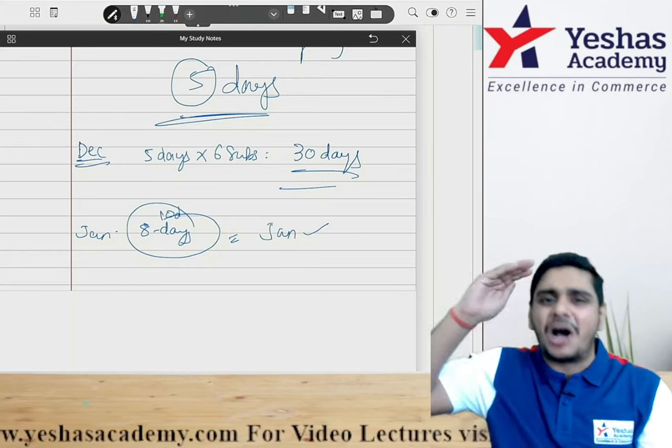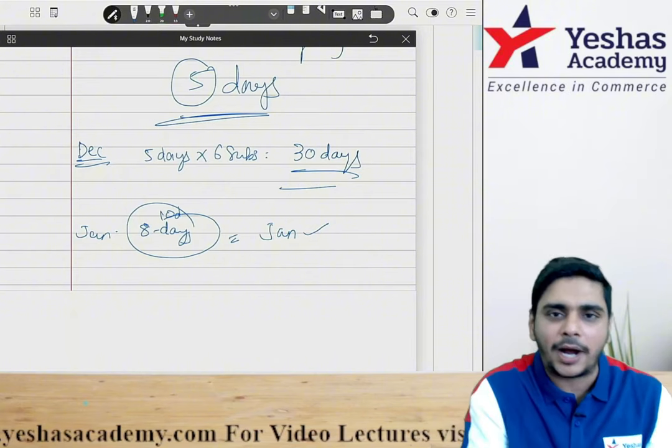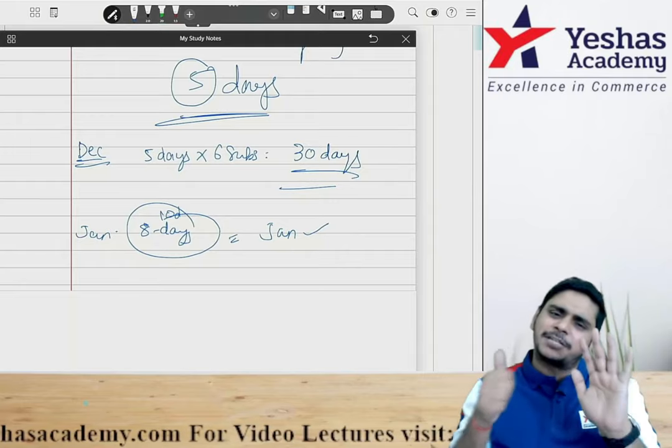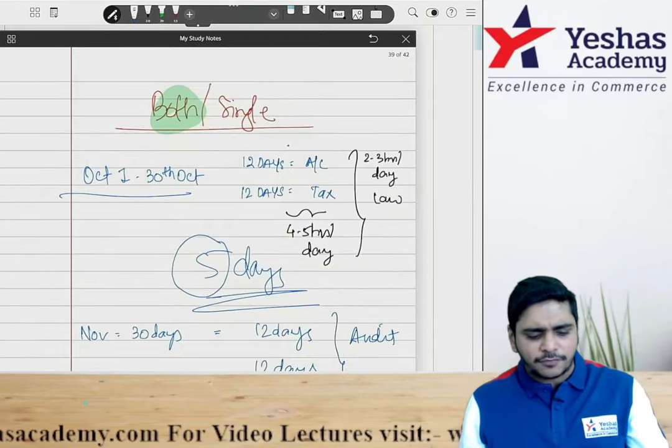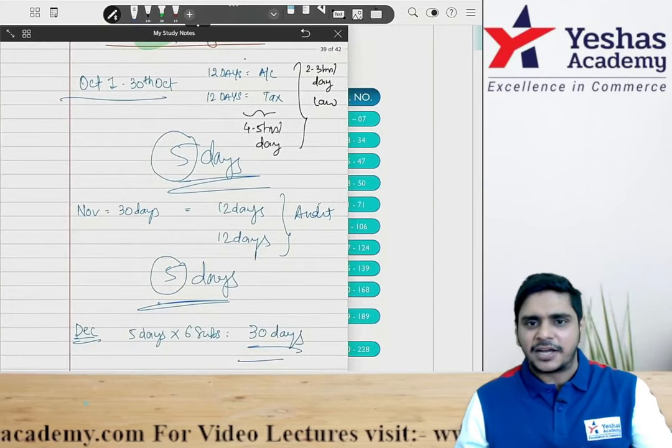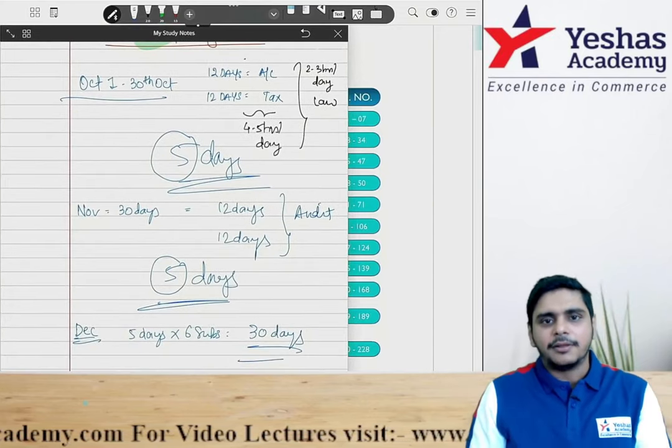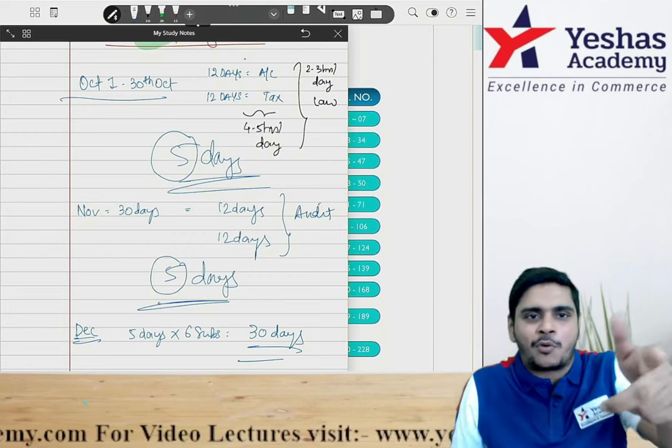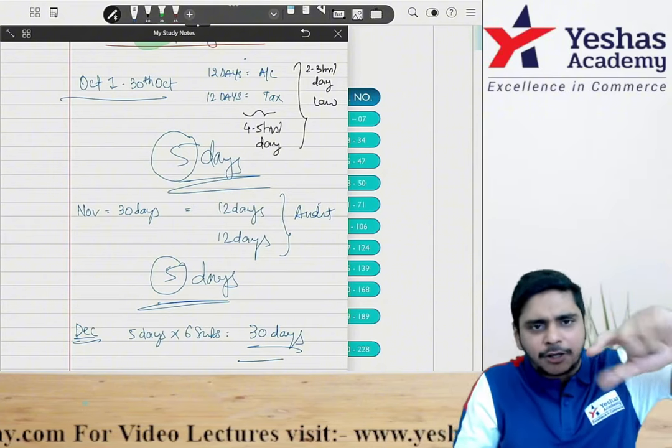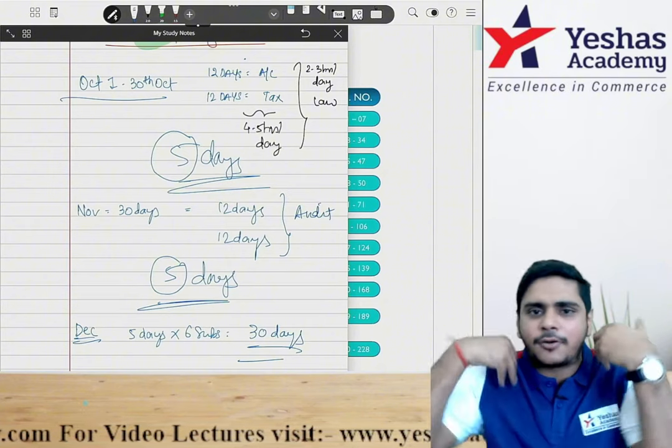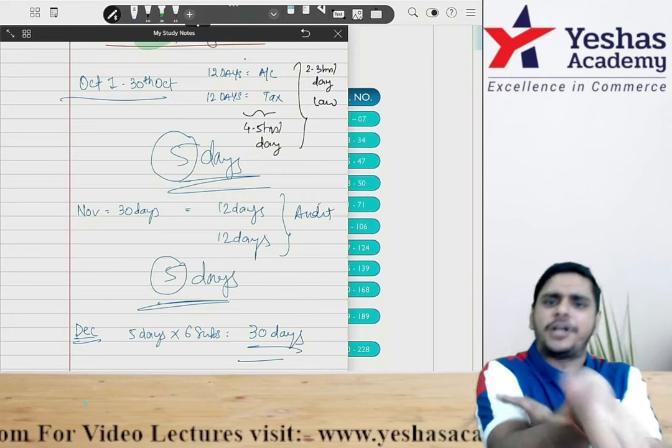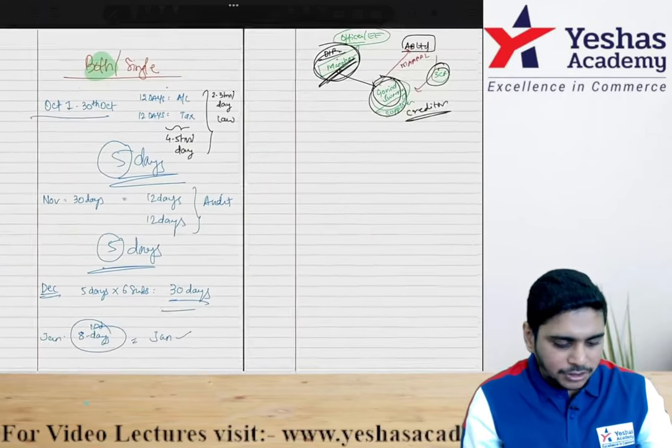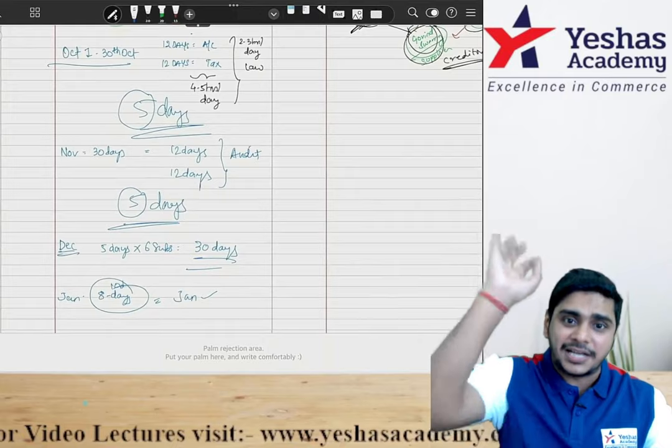So both the groups are possible, boss, obviously it is possible. Provided that gist is in you that I need to offer for both the groups. It is not both the groups, for me it is 6 papers. You can change the combination. Why do you want to do group wise? Anyways I have to clear both the groups, then only my articleship will start. Boss, if both the groups are clear, then only my articleship will start. So why I should say, I should do accounts and tax. I can do accounts and costing also. I can do accounts and FMSM also. Eventually I have to write all the 6 papers. Instead of doing law for second, do audit for 5th of October month. So whatever is your fault, you can swap the subject. If you see the timetable boss, it is easily manageable. Jan 25 people, both the groups easily manageable.